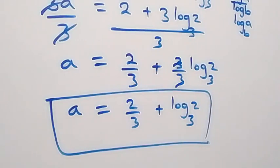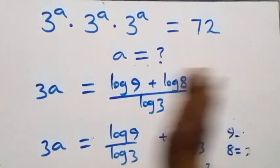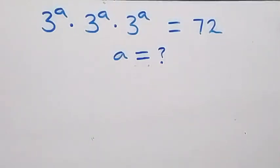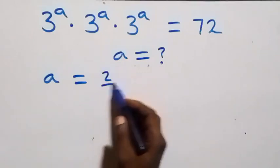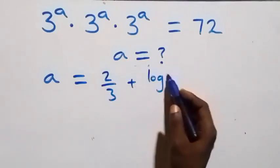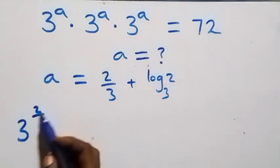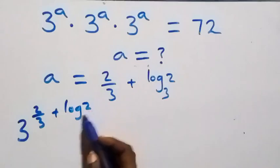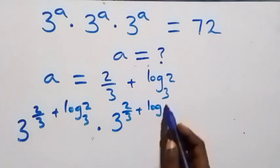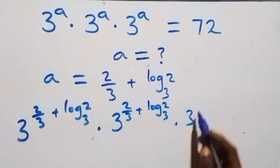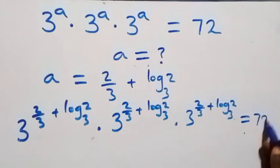Now let's check if this satisfies the given problem. We substitute the value of a, which is a equals 2 over 3 plus log 2 to base 3. What we have becomes: 3 raised to power (2/3 + log₂ base 3), times 3 raised to power (2/3 + log₂ base 3), times 3 raised to power (2/3 + log₂ base 3), equals 72.